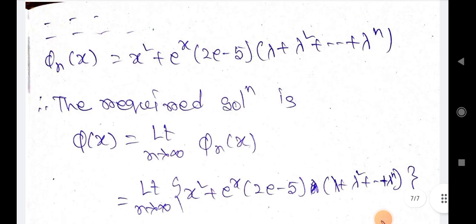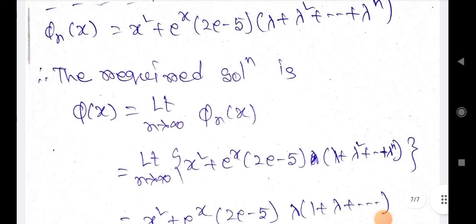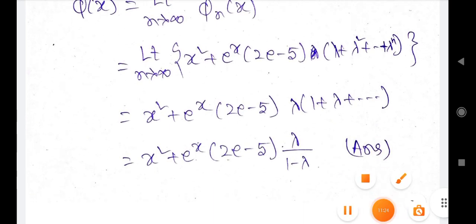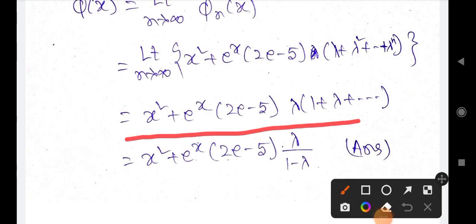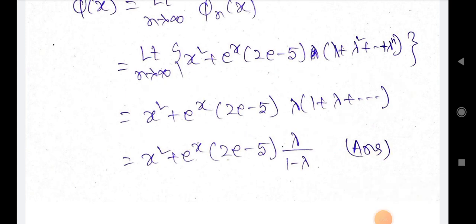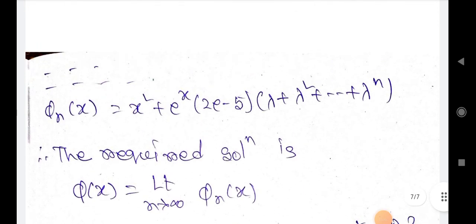Similarly, we get φₙ(x) = x² + eˣ·(2e-5)·(λ + λ² + ... + λⁿ). The required solution is φ(x) = lim(n→∞) φₙ(x) = x² + eˣ·(2e-5)·λ·(1 + λ + ...) = x² + eˣ·(2e-5)·λ/(1-λ). This is the answer and this example is complete. The topic is also complete.